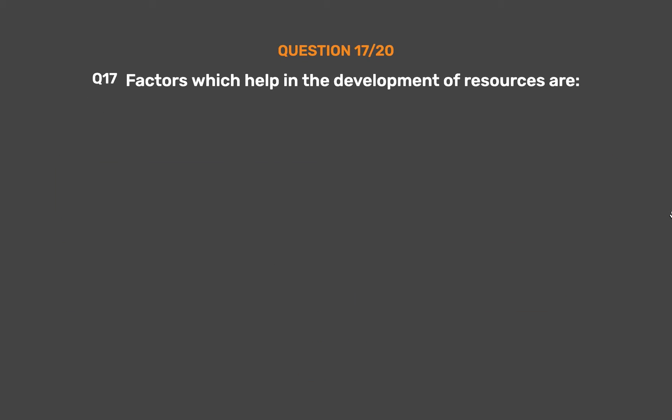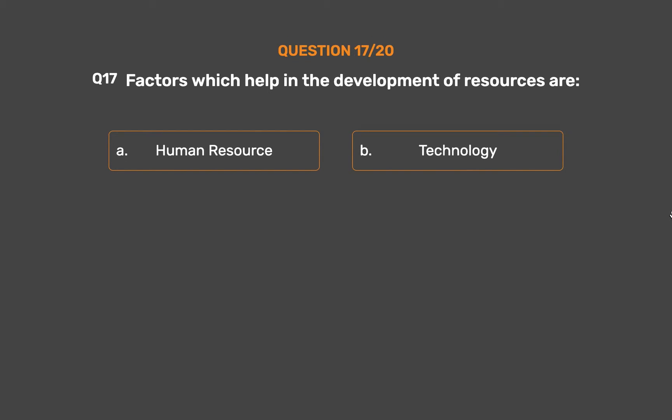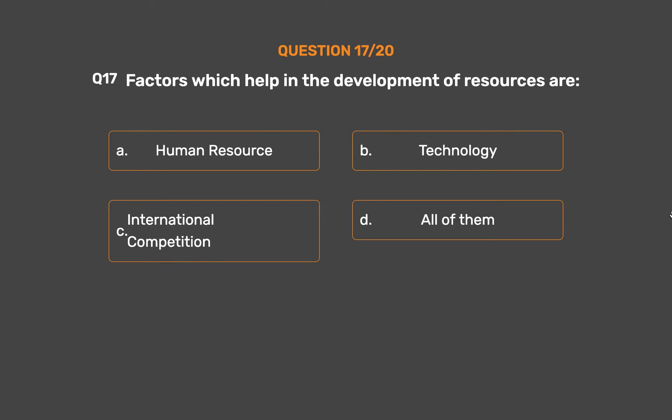Question number 17. Factors which help in the development of resources are: Option A: Human resource. Option B: Technology. Option C: International competition. Option D: All of them.